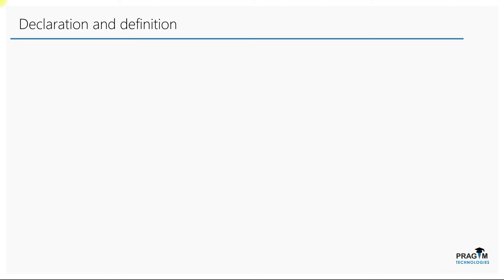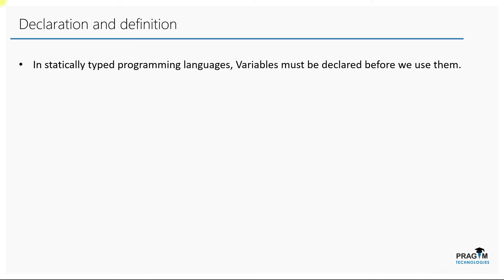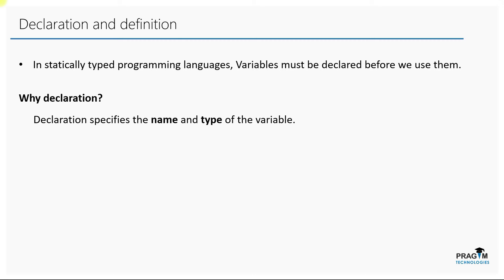Like C, C#, and Java, Go is also a statically typed programming language. In statically typed programming languages, variables must be declared before we use them. Declaration specifies the name and type of the variable that we are going to use in our program. There are three different ways to declare a variable in Golang.